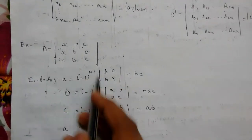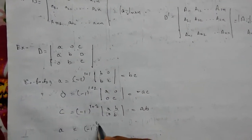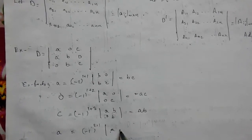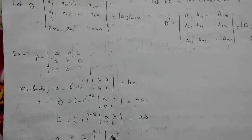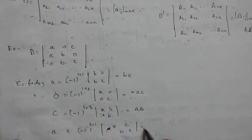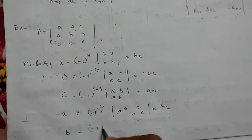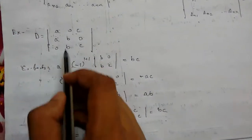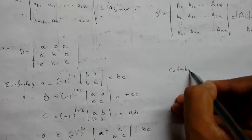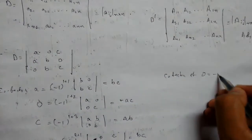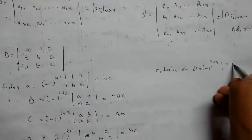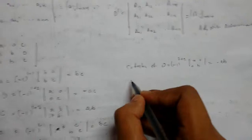Now cofactors of the second row. Cofactor of a: (-1)^(2+1) times |0, c; b, c| = bc. Cofactor of b: (-1)^(2+2) times |a, c; 0, c| = ac. Cofactor of 0: (-1)^(2+3) times |a, 0; 0, b| = -ab.